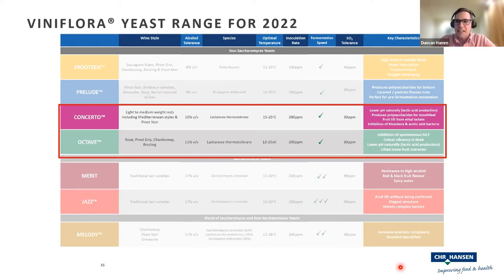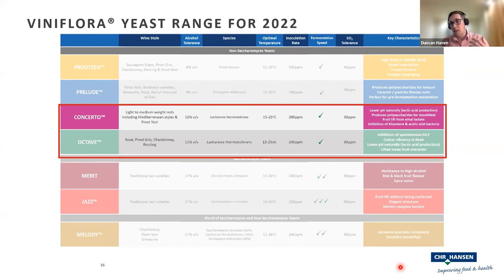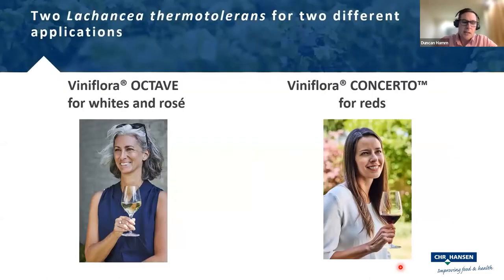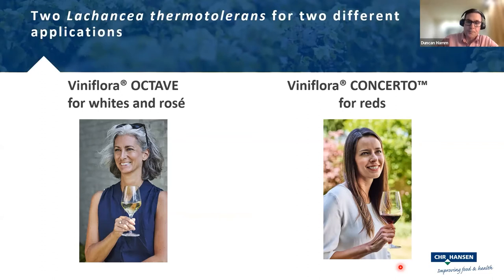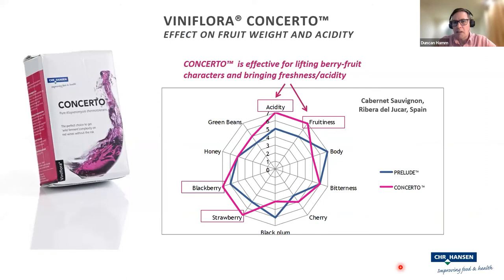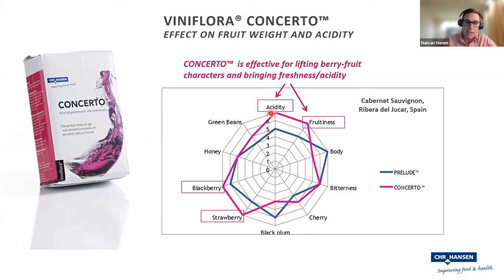That brings us back to our yeast table. The next two yeasts I'd like to talk about are both Lachancea thermotolerans — we have two yeasts of this species with quite different positioning. They're called Concerto and Octave. We tend to position them such that Octave is ideal for whites and Rosé, while Concerto is actually far better in red wines. Going back to our Cabernet from the Ribera del Júcar, we can see from the Concerto treatment we have a bit more acidity in the wine compared to the Prelude. We know that Lachancea thermotolerans has the ability to produce lactic acid from grape sugars, which comes through in this wine. We also see overall general fruitiness and stronger blackberry and strawberry characters.